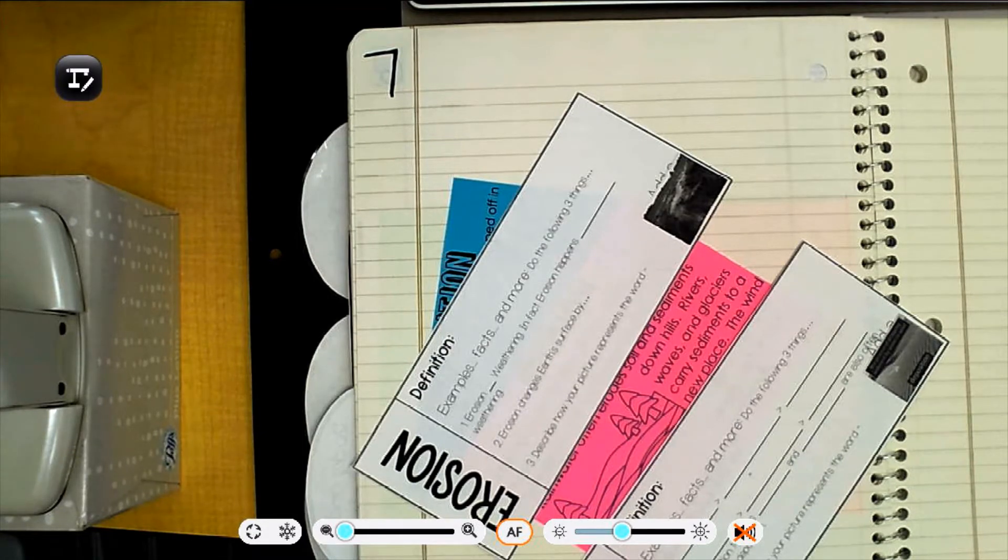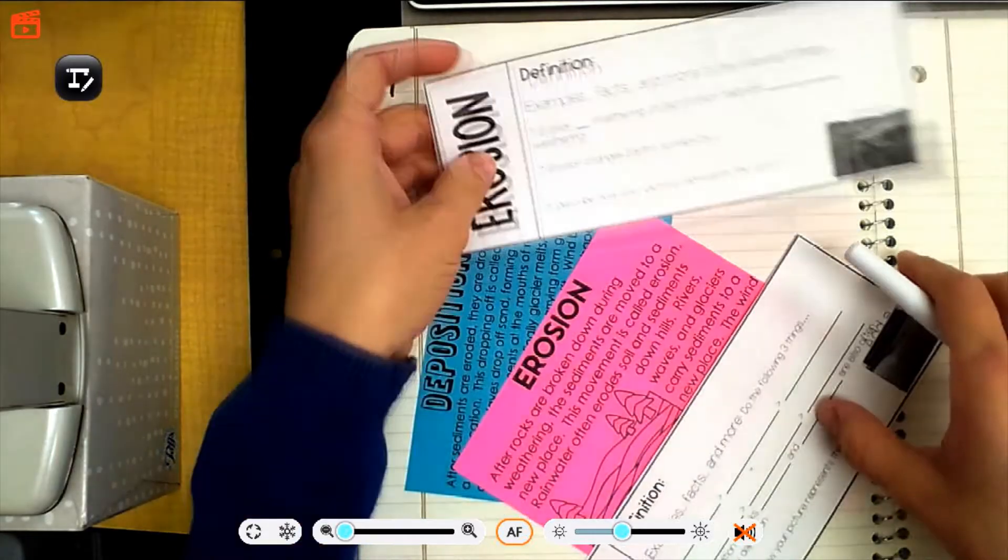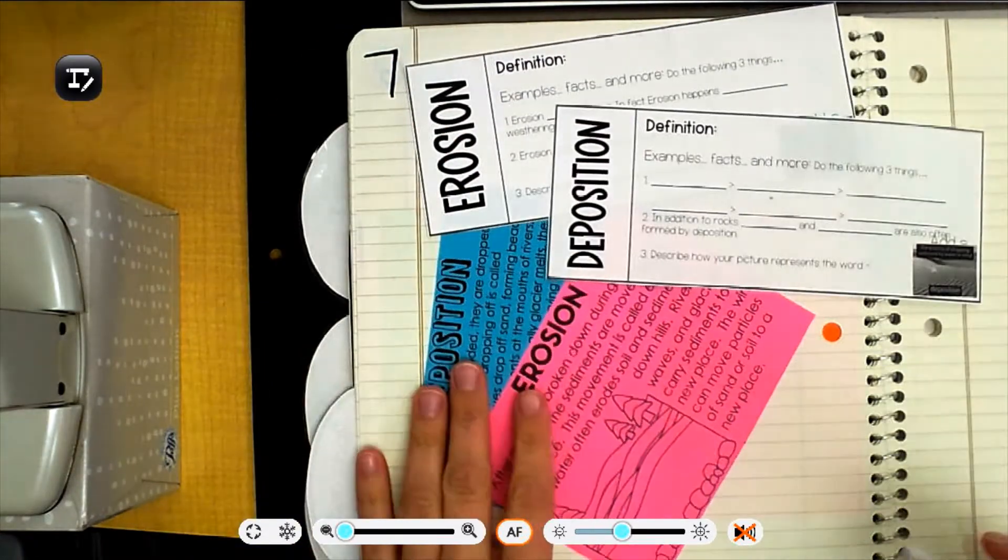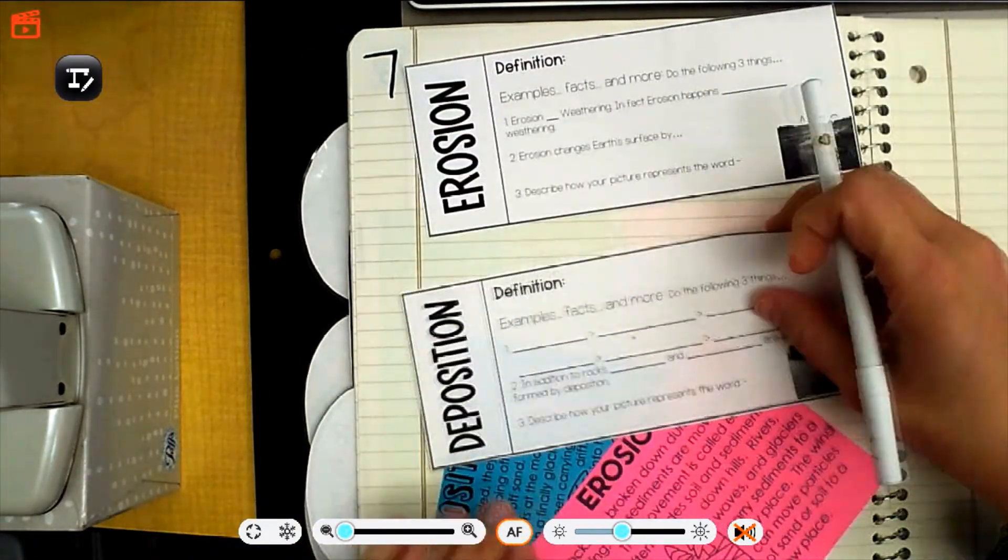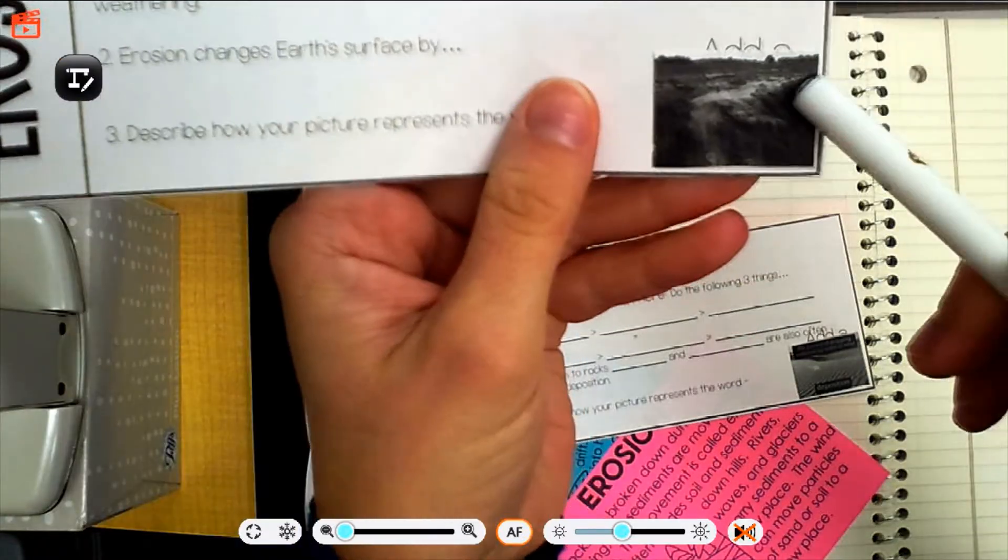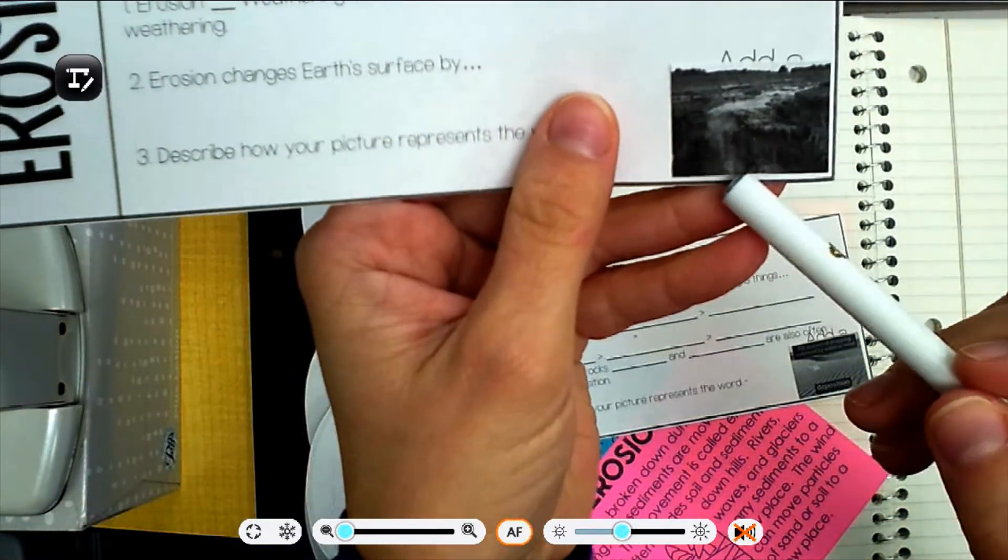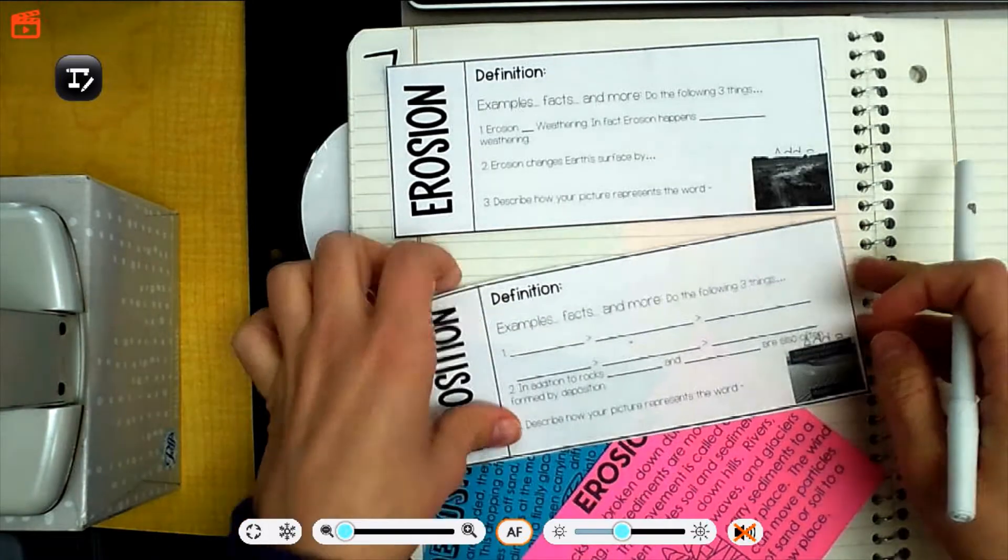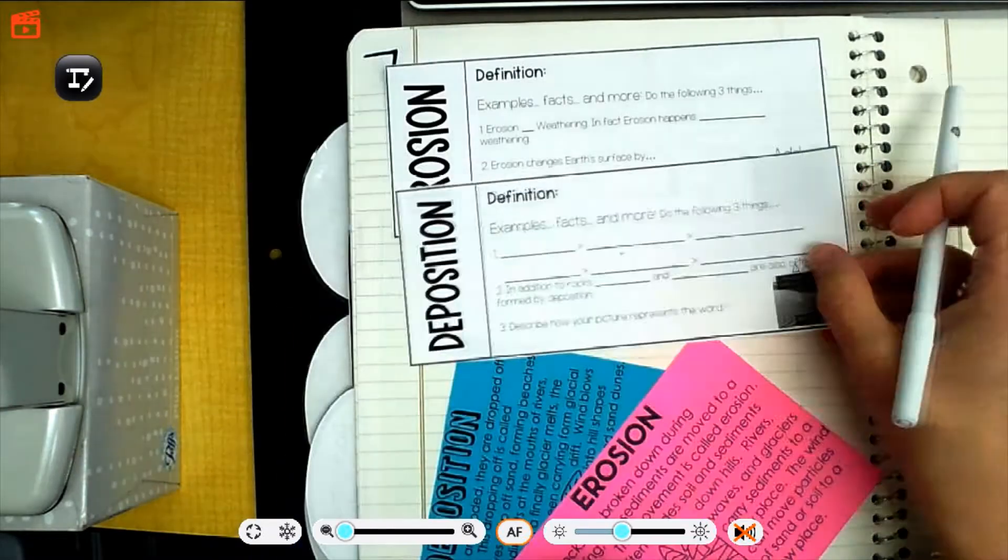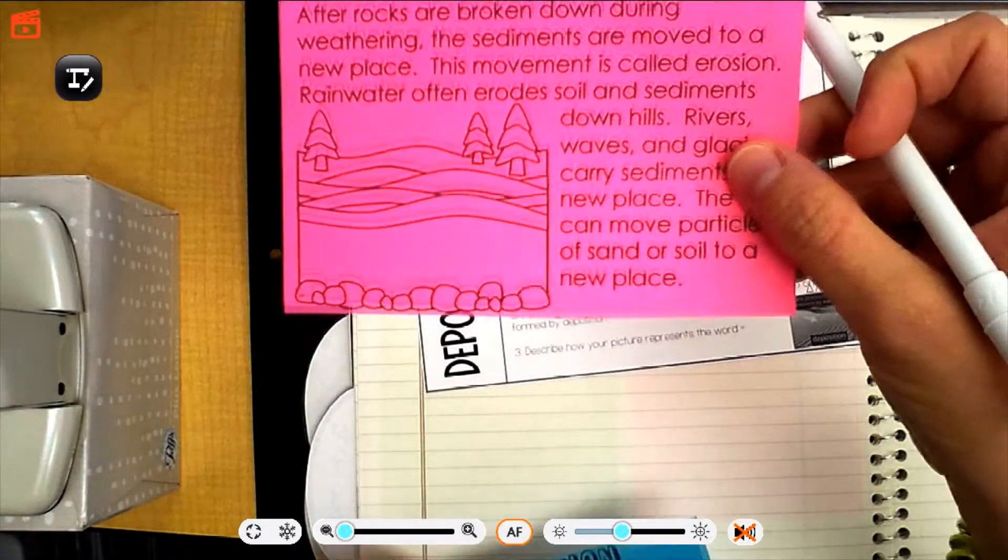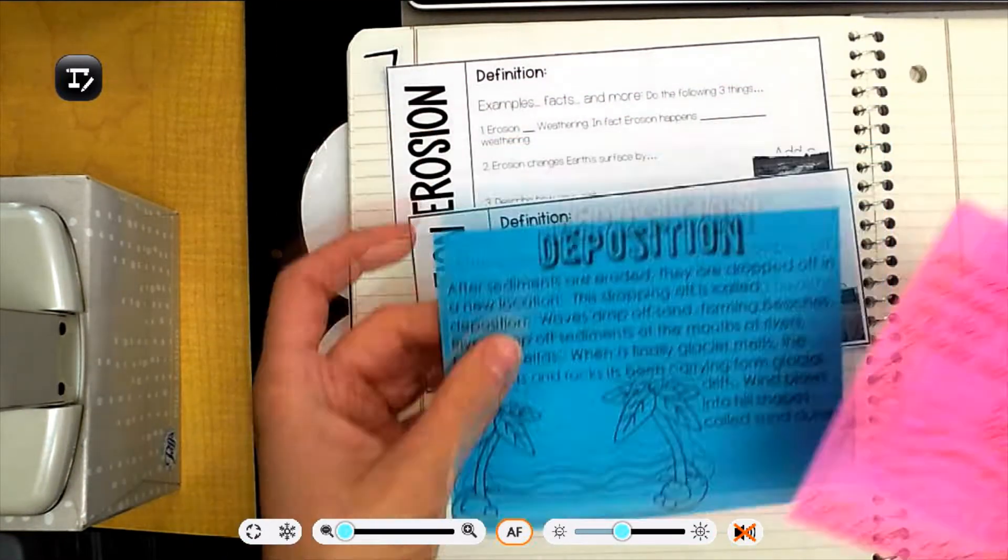Okay, so the video for page 7. I lost my pen, there it is. So you're going to need from your vocab packets the word erosion and the word deposition. The pictures that go with those, erosion looks kind of like a waterfall, but it's more like a swamp that's falling off a cliff. And then deposition says the word deposition on it. And then you're going to need the pink erosion paper and the blue deposition paper.